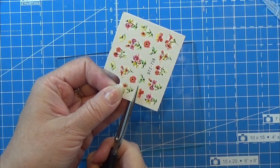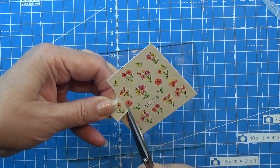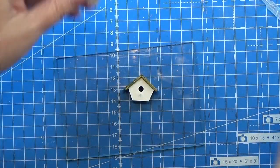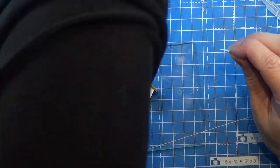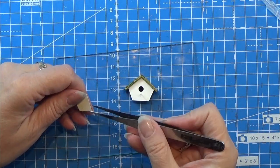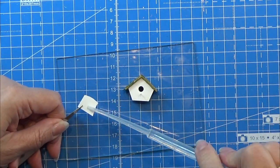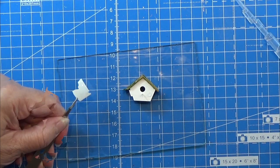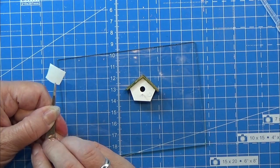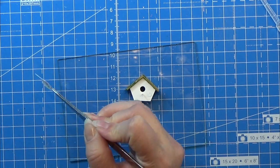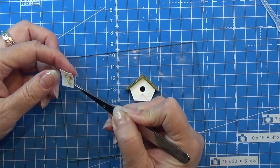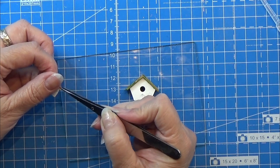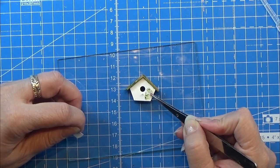If you want to decorate your little birdhouse a tiny bit, you can use some of these nail art decals, water decals. I am just taking the wrapper off it and placing a bit of water on the paper, leaving it there for a few seconds. Then you can slide off the little picture and place it wherever you want to. I am going to place it on the little birdhouse.